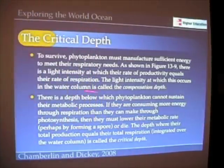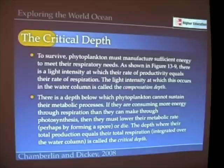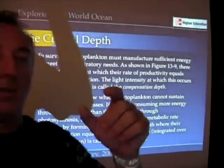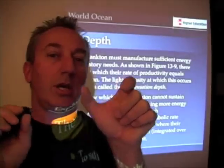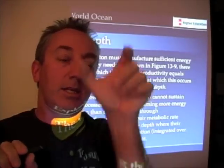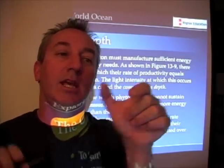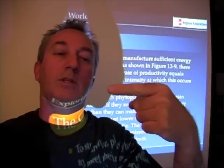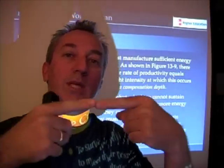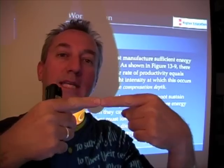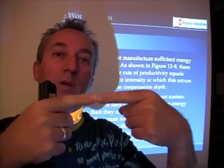That depth is called the compensation depth. Put another way, the compensation depth is the depth that supports a light intensity that supports just enough productivity to meet the respiratory needs of the phytoplankton.